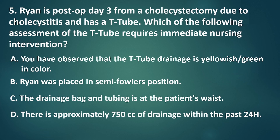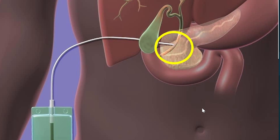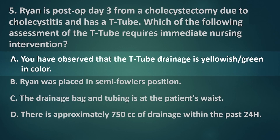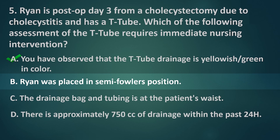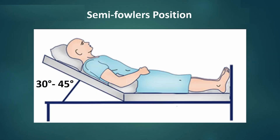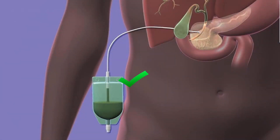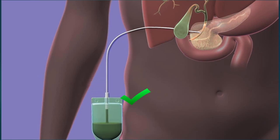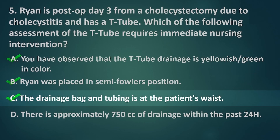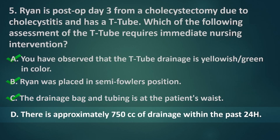Applying the process of elimination: The T-tube is placed in the common bile duct. It drains both bilirubin, which is yellowish, and bile, which is greenish, making statement A correct and not alarming. Option B — Ryan placed in semi-Fowler's position — is correct as it facilitates drainage due to gravity, elevating the head 30 to 45 degrees. Option C — drainage bag and tubing at the patient's waist level — is acceptable; it can also be placed below waist level but not at the level of the incision. Option D — 750 cc of drainage within 24 hours — is alarming as the maximum drainage should only be 500 cc, making option D require immediate nursing action. Therefore, the correct answer is letter D.